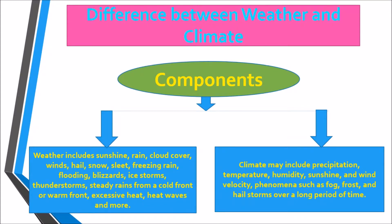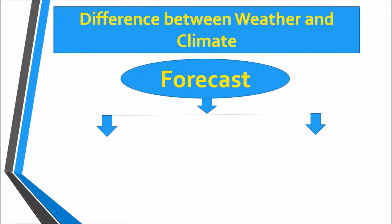Climate may include precipitation, temperature, humidity, sunshine, and wind velocity, as well as phenomena such as fog, frost, and hail storms, measured over a long period of time.